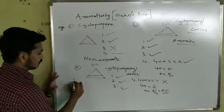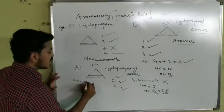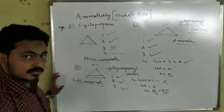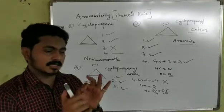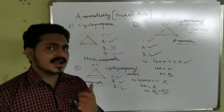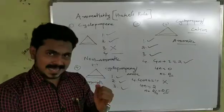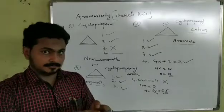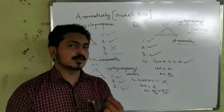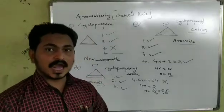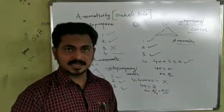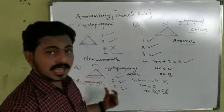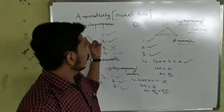Since the fourth condition is not satisfied (n = 0.5 is not a whole number), the cyclopropenyl anion is anti-aromatic. A compound that is planar, cyclic, and conjugated but does NOT satisfy 4n + 2 pi electrons is called anti-aromatic.